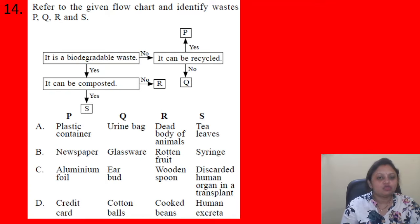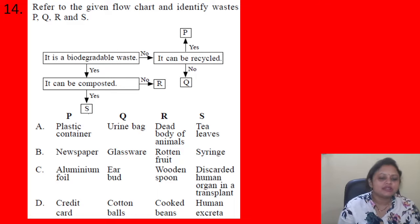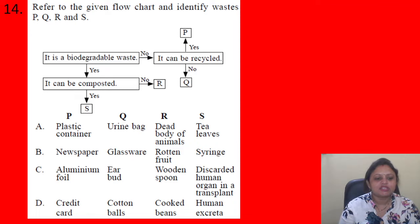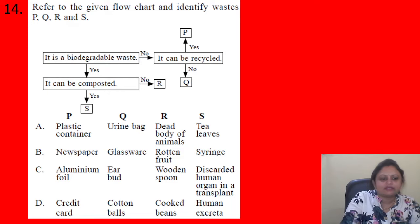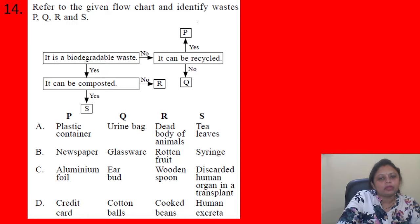Next question: Refer to the given flow chart and identify wastes P, Q, R, and S. The flow chart asks: is it biodegradable? No — can it be recycled? Yes: P; No: Q. Is it biodegradable? Yes — can it be composted? No: R; Yes: S. So P is non-biodegradable and recyclable; Q is non-biodegradable and non-recyclable; R is biodegradable but not compostable; S is biodegradable and compostable.